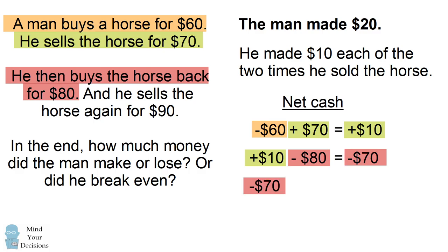He finally sells the horse again for $90, which means he gets $90. So negative $70 plus $90 equals plus $20. In the end, he makes $20.